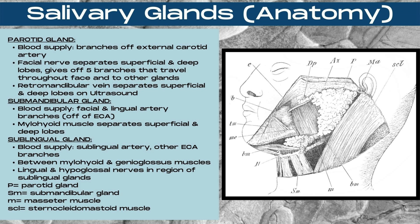The submandibular gland is supplied by the facial and lingual artery branches, which come off of the ECA. The mylohyoid muscle separates the superficial and deep lobes of the submandibular glands. The sublingual gland is supplied by the sublingual artery and other small ECA branches, and is located between the mylohyoid and the genioglossus muscles.